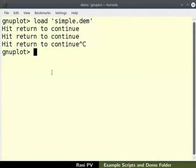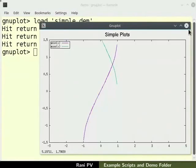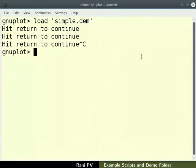Press ctrl and c keys in the terminal to come back to the gnuplot prompt. Now, I will close this graphical window. I will open a 3d plot example file next.